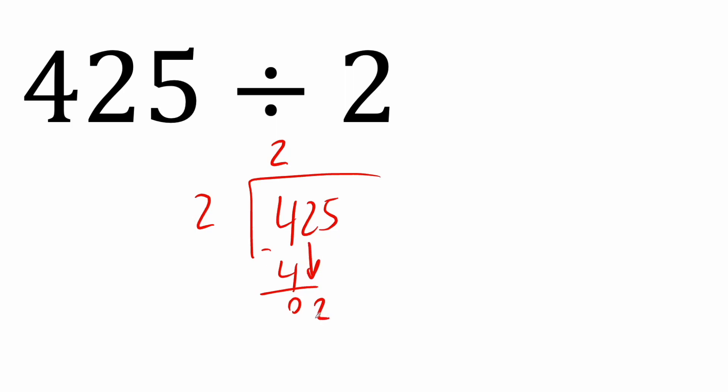How many times can 2 go into 2? One time. So we subtract again, and we get 0. So now we bring down our 5.